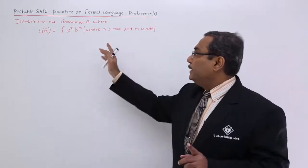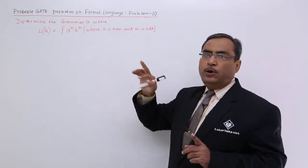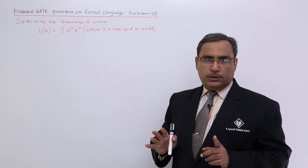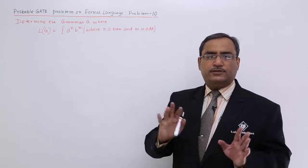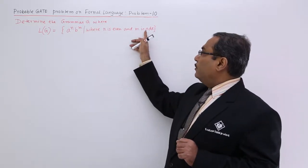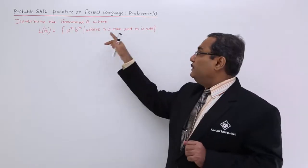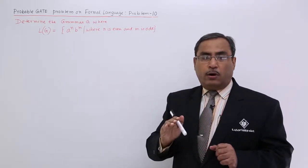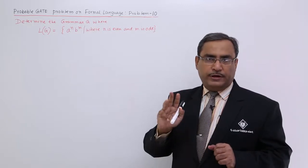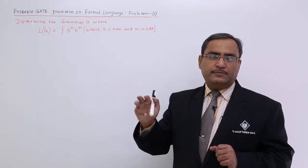Constraint number two is that n is even. So a will always be even number of. I can think that a will be of 0 number, 2 number, 4 number, 6 number and so on. And b will be of odd number because m is odd. So b can occur once, 3 times, 5 times, 7 times and so on.